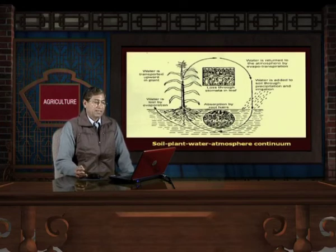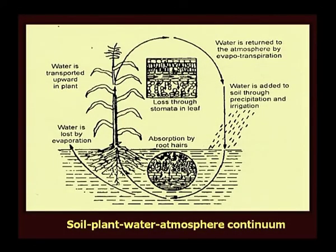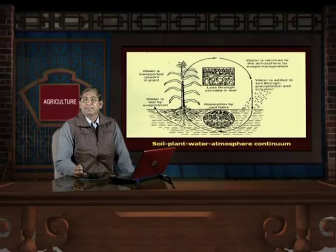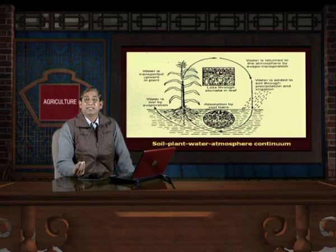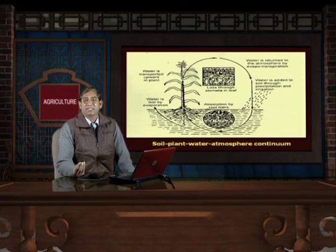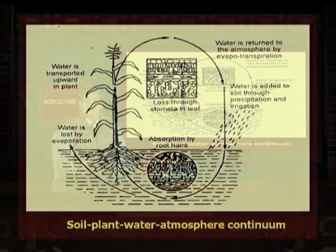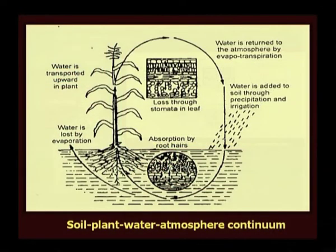This is the soil-plant-water-atmosphere continuum. When water is added to the soil through precipitation and irrigation, it fills the micropores and then the macropores of the soil, then it is taken up by the plant through root hairs and enters the plant system. Most of the water is used for transpiration and some part is used in metabolic activities. Simultaneously, evaporation of water from the soil surface also takes place, and both transpiration and evaporation add water to the atmosphere, which ultimately returns to the soil through precipitation or irrigation.